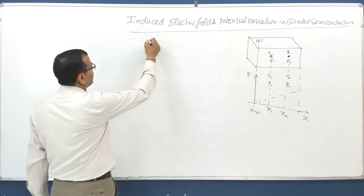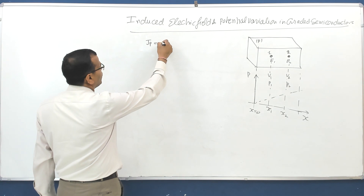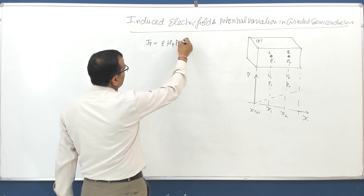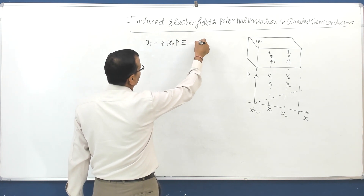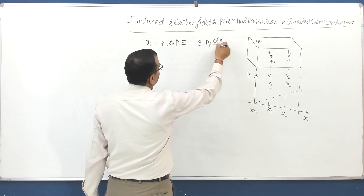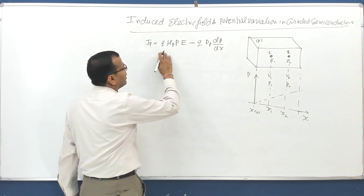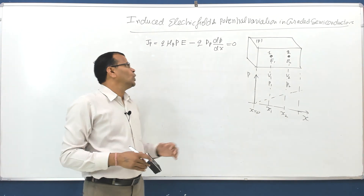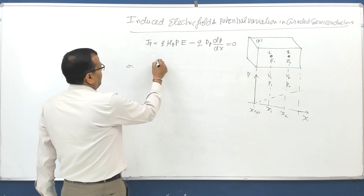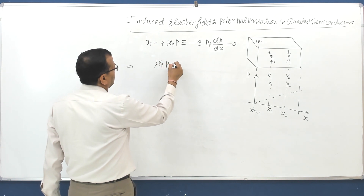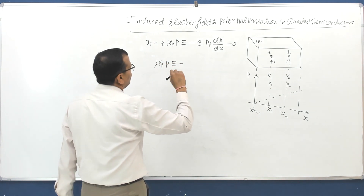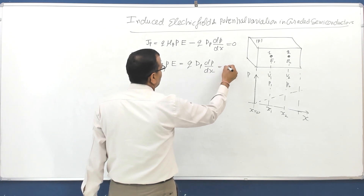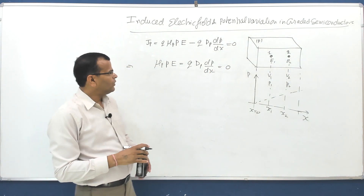The total current inside the semiconductor bar for holes is: Jp = q·μp·p·E − q·Dp·(dp/dx), and that equals zero. This gives μp·p·E equal to Dp·(dp/dx), which also equals zero for the net current condition.